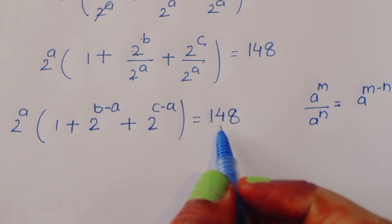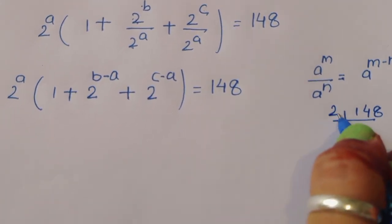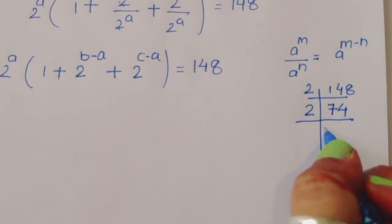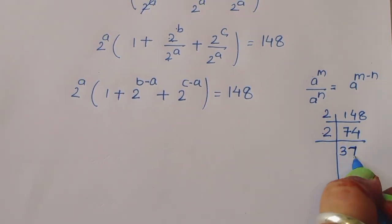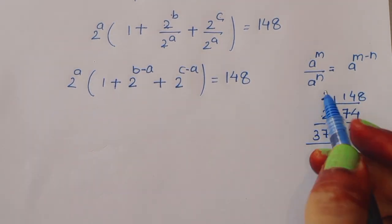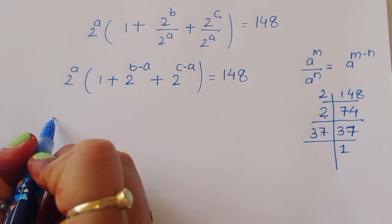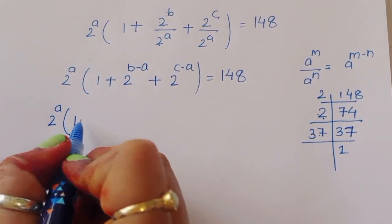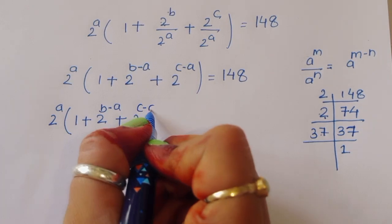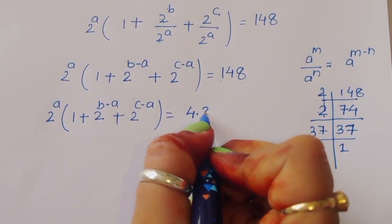Now we find the factors of 148. Factoring: 148 = 2 × 2 × 37 = 4 × 37. So we can write: 2 power a times (1 plus 2 power b minus a plus 2 power c minus a) equals 4 times 37.